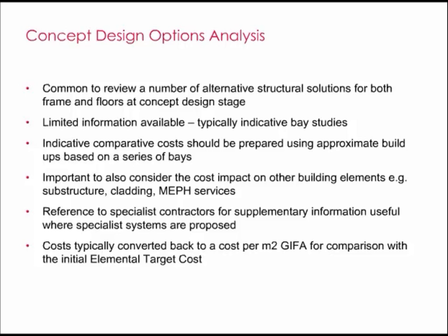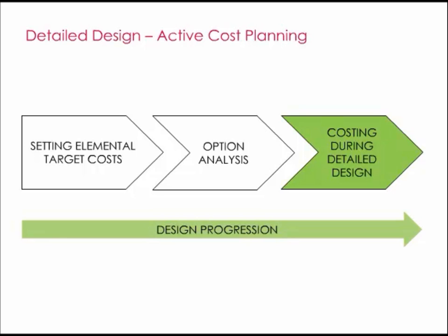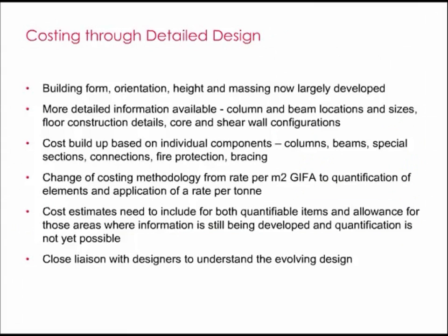Once typical quantities are established for any option, initial approaches can be made to steelwork contractors for market testing rates. Once the comparative costings for the alternative options are complete, it is common to convert the cost back to a cost per square meter so they can be more readily compared with the budget allowance and between alternative solutions. As the options analysis is concluded, the impact on programs should also be considered, which could affect preliminaries costs, the impact on a requirement to hand over the building by a certain date, and whether the favoured option is consistent with the design intent. Once an option is selected, more detailed cost planning will evolve through the more detailed design stages where the building form, orientation, height, and massing will now be largely developed.